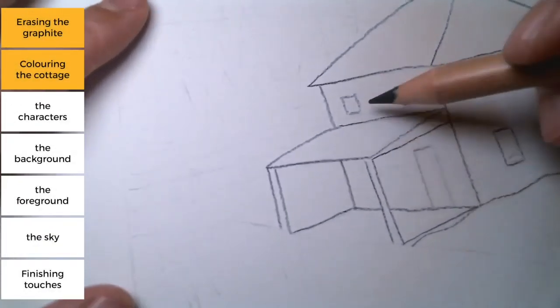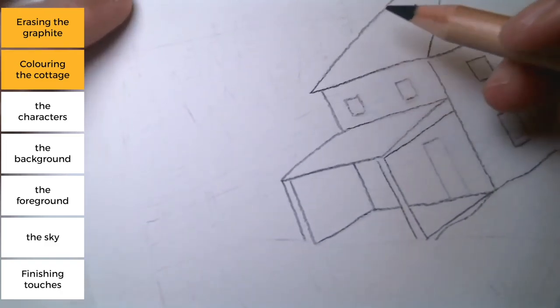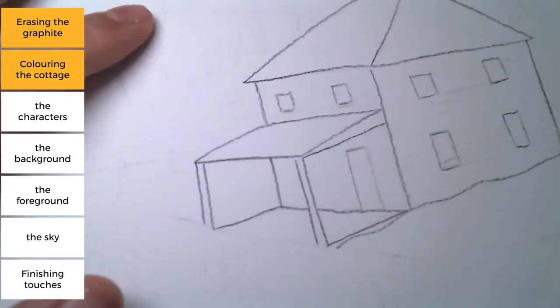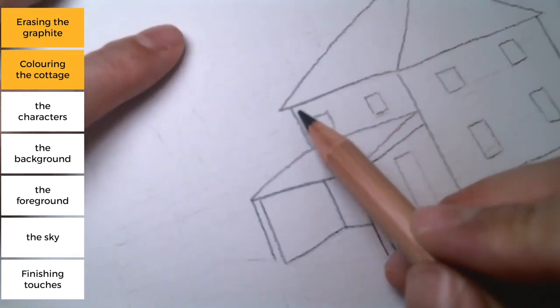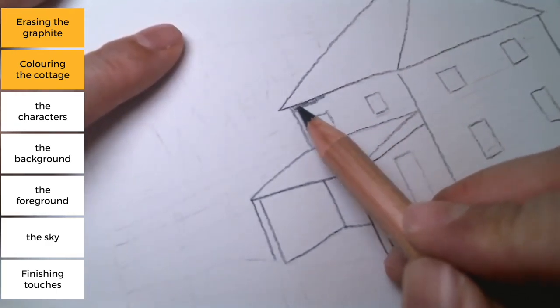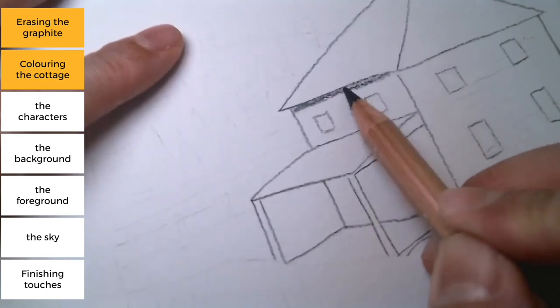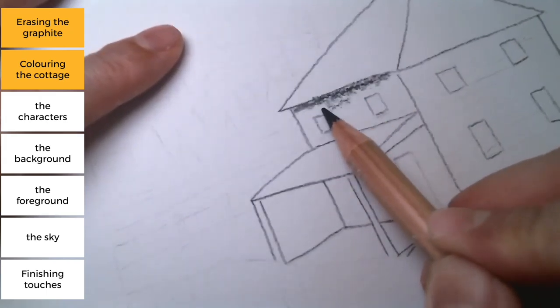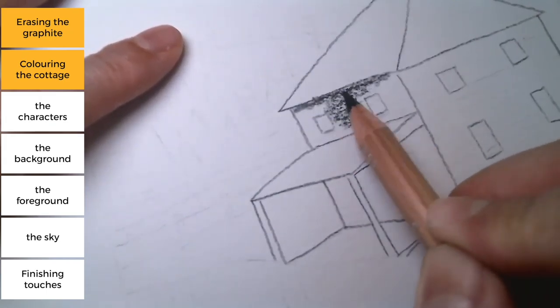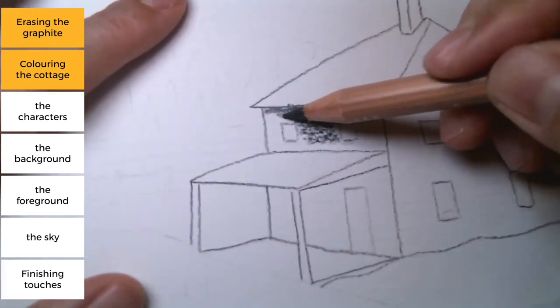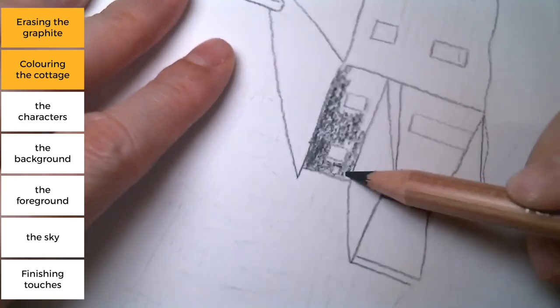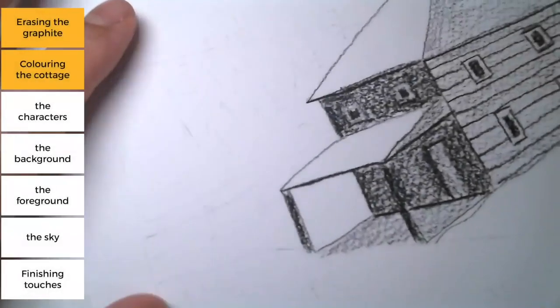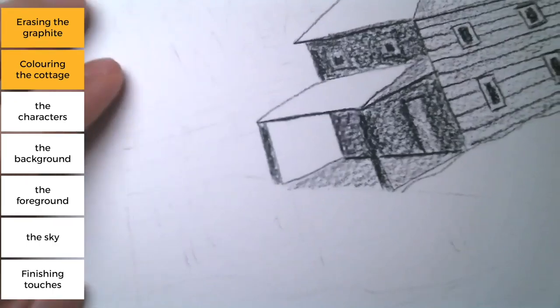Now remember, this side is the darkest, so we're going to color this with a lot of pressure. Let's just run through it in this angle. Okay, so that's our cabin.